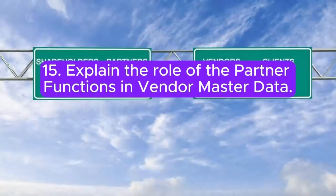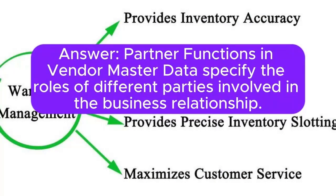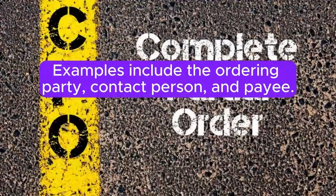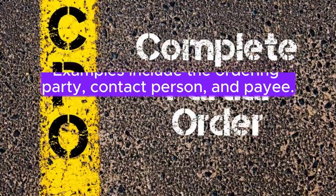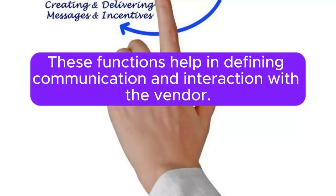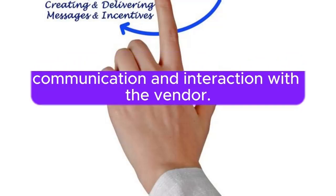15. Explain the role of the partner functions in Vendor Master Data. Answer: Partner functions in Vendor Master Data specify the roles of different parties involved in the business relationship. Examples include the ordering party, contact person, and payee. These functions help in defining communication and interaction with the vendor.